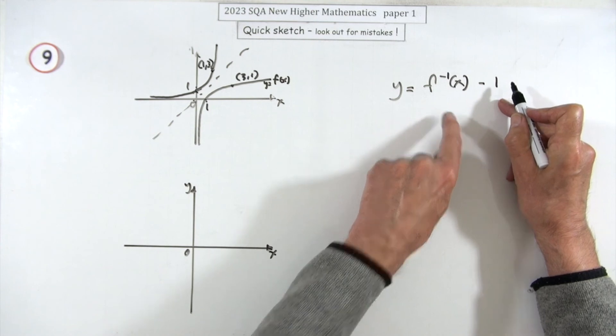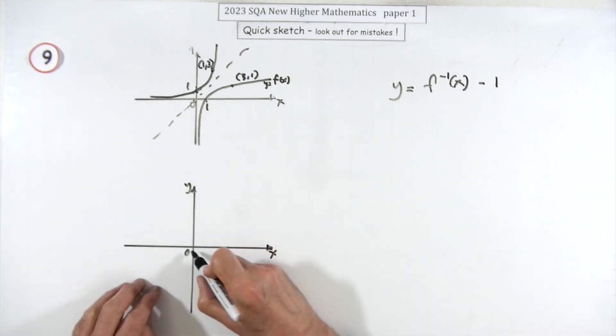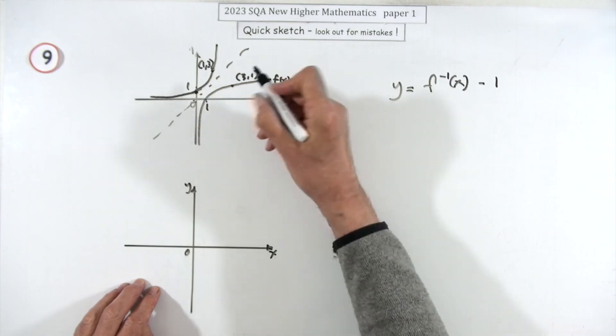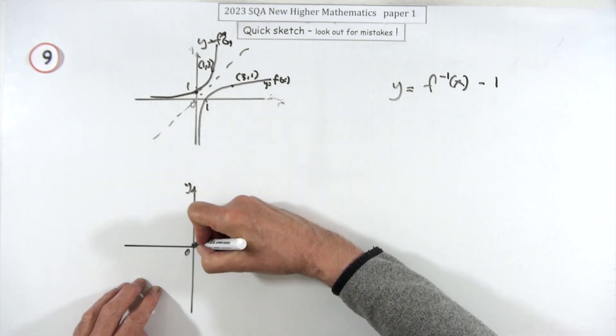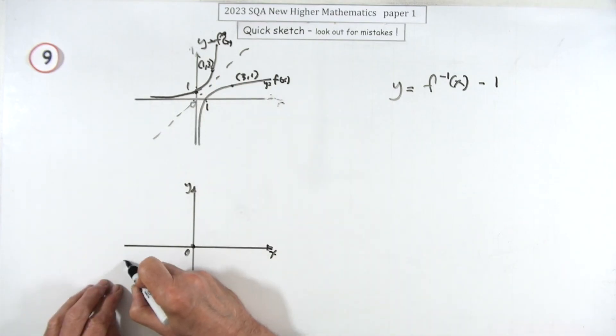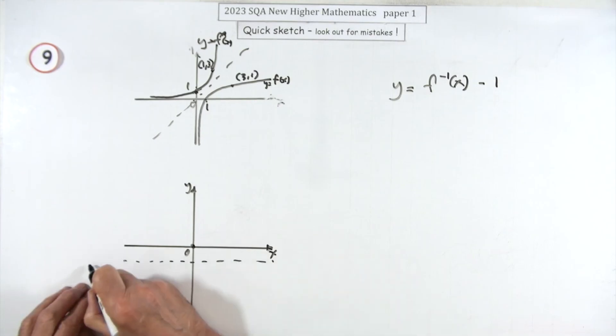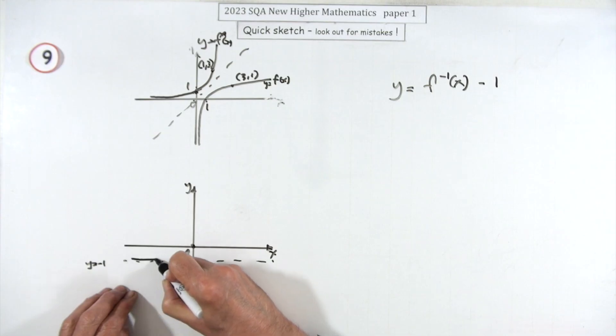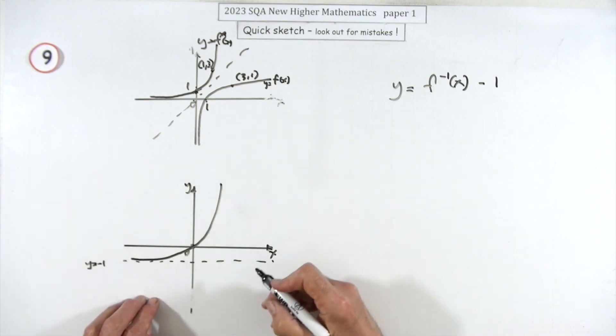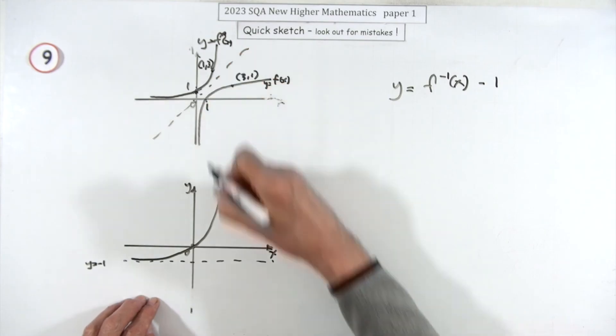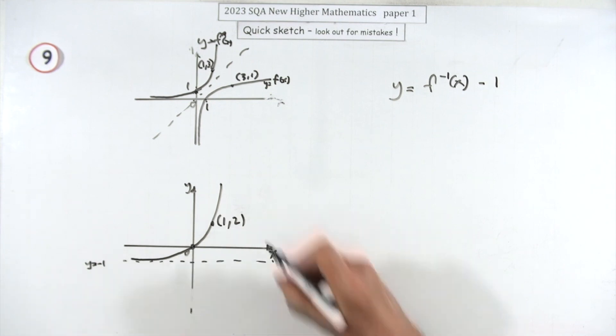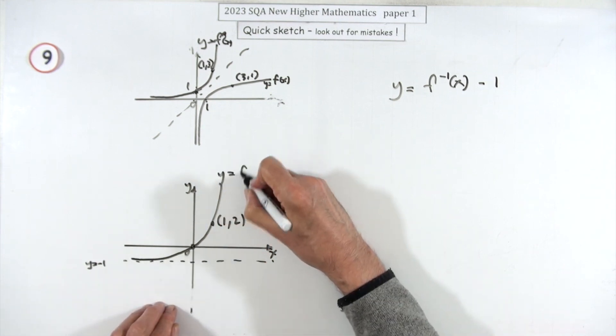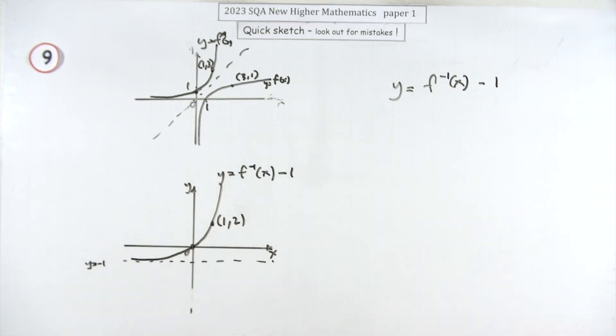So all you've got to do now is drop it down one. If that drops down one, that's y equals f⁻¹(x) minus one. It's going to go to here, and then this line - the line y equals negative one will be the asymptote, so it shouldn't touch that. Then it goes sharply off after that, and the point that was (1, 3) will now drop to (1, 2). Those are the two points you would show to get the graph of y equals the inverse function dropped one.